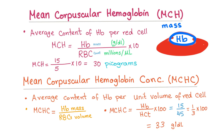Now let's talk about mean corpuscular hemoglobin (MCH) and mean corpuscular hemoglobin concentration (MCHC). MCH is the average content or weight of hemoglobin per red cell — hemoglobin mass divided by RBC count. For example, hemoglobin of 15 g/dL divided by an RBC count of 5 × 10¹² gives about 30 picograms. So MCH is hemoglobin mass over RBC count, with a normal value around 30 picograms.